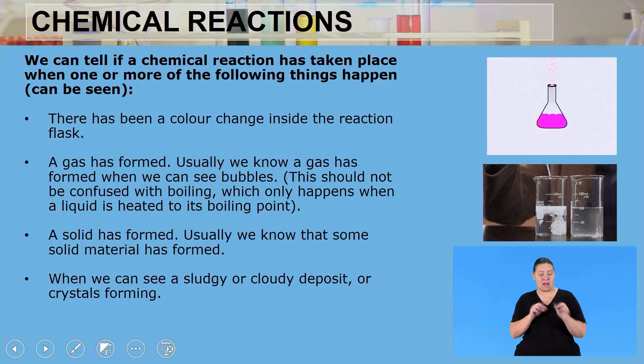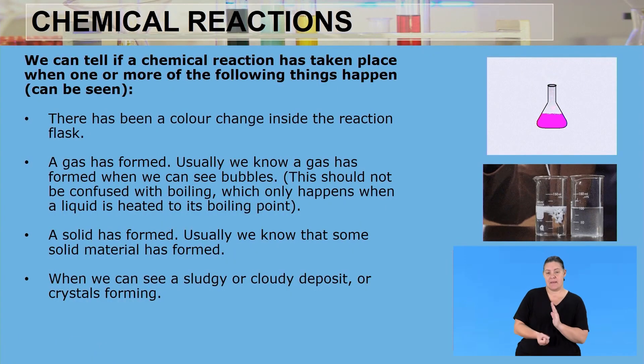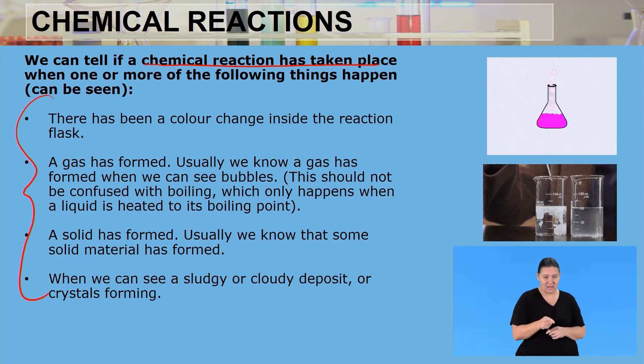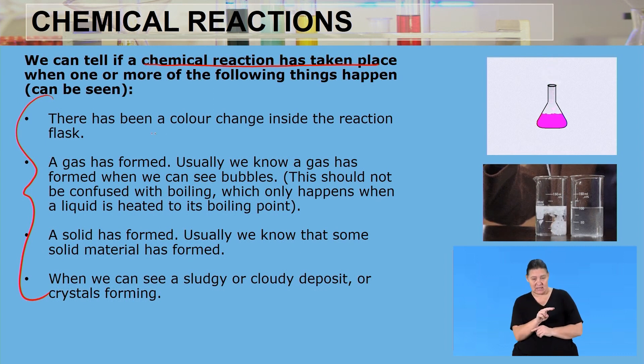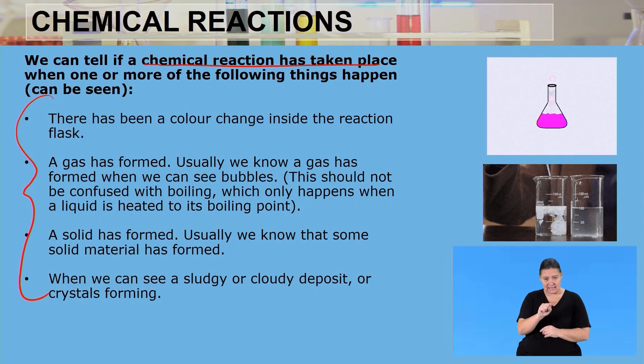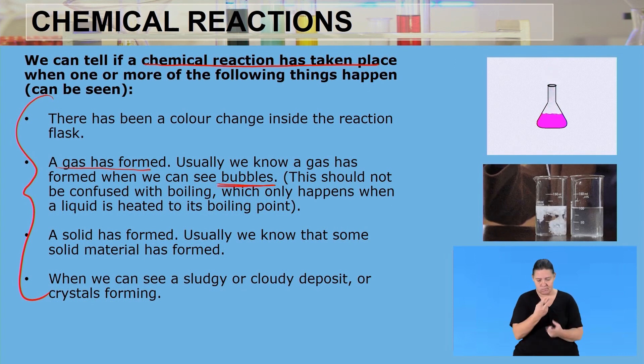We can tell that a chemical reaction has taken place when one of the following occurs. Number one: if you see a color change inside the reaction flask — when you mix two or more substances and observe a color change, a chemical reaction has taken place. Number two: when a gas has been formed, usually indicated by bubbles. When you see bubbles, those bubbles are carrying gas out of the reaction flask.